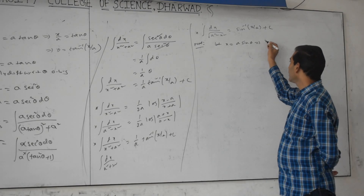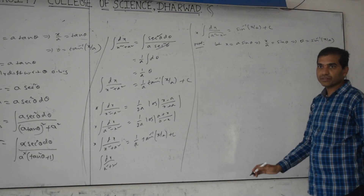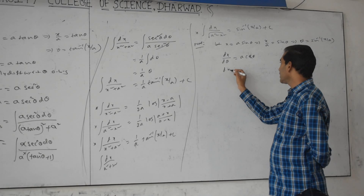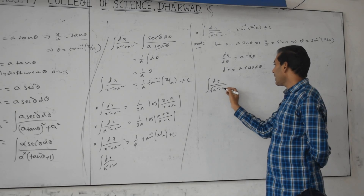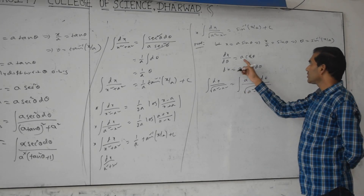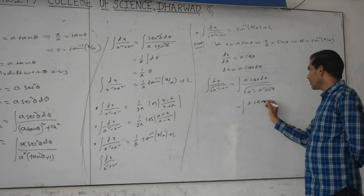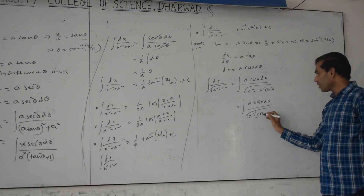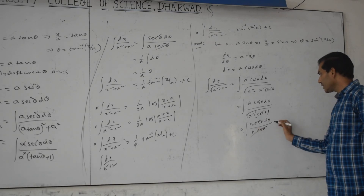Let x equal a sin θ. Then x by a equals sin θ, so θ equals sine inverse of x by a. After differentiation: dx by dθ equals a cos θ, so dx equals a cos θ dθ. Integration of dx by root(a² minus x²): substitute x equals a sin θ, so a² minus x² equals a²(1 minus sin²θ) equals a² cos²θ. Integration becomes a cos θ dθ by a cos θ — these cancel — giving integration of dθ equals θ equals sin inverse of x by a plus c.